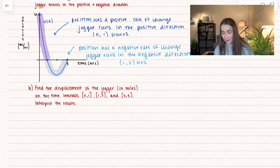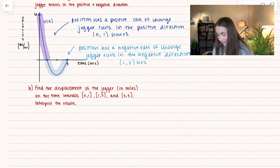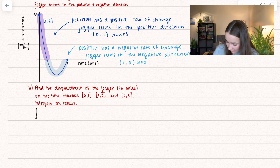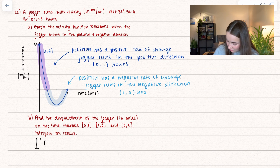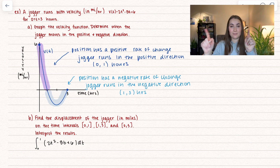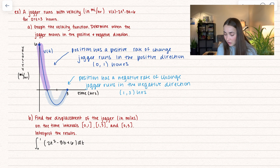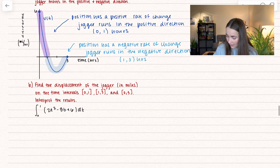For part B, we want to find the displacement of the jogger in miles on the time intervals 0 to 1, 1 to 3, and 0 to 3. Remember, when we find displacement we are integrating our velocity function. Our velocity function is 2t² − 8t + 6, and we're integrating in terms of time. This will represent the distance between start and finish over each interval. Just looking at the graph, the first interval gives the distance moving in the positive direction.